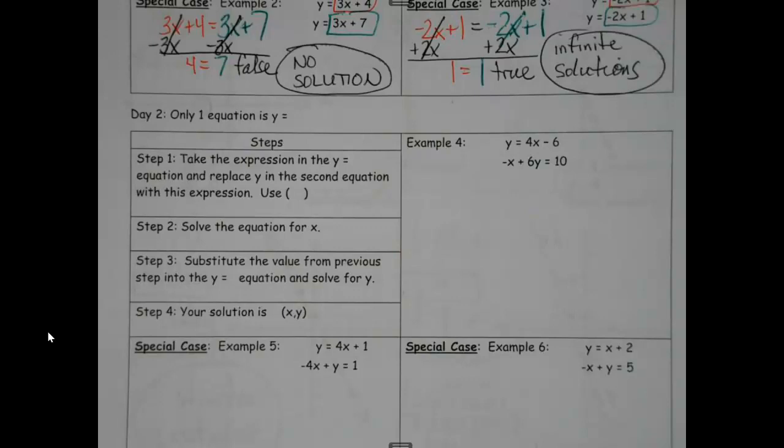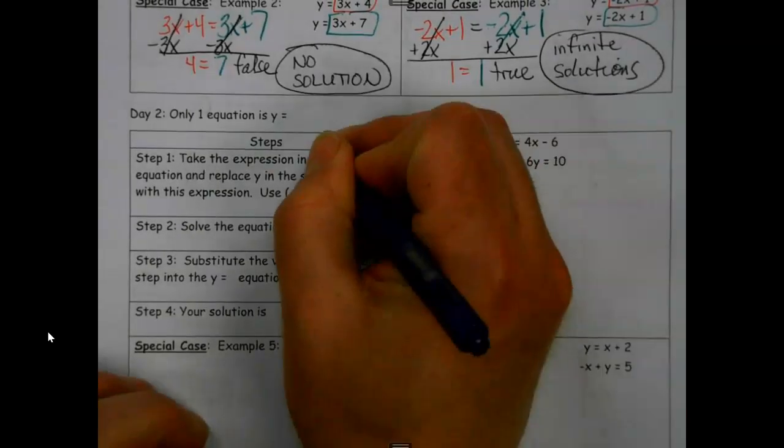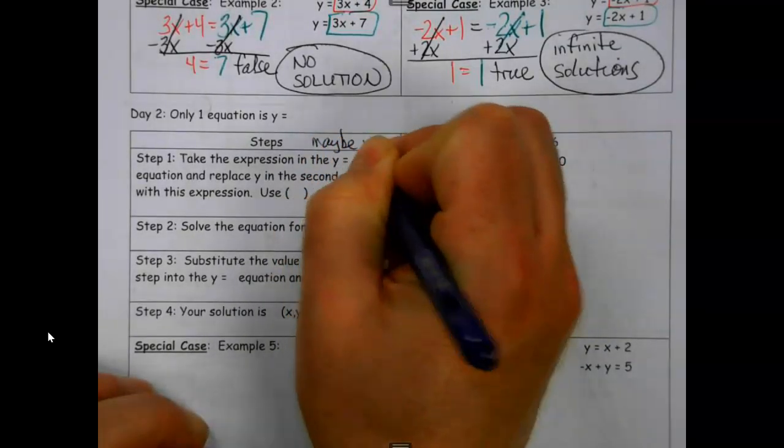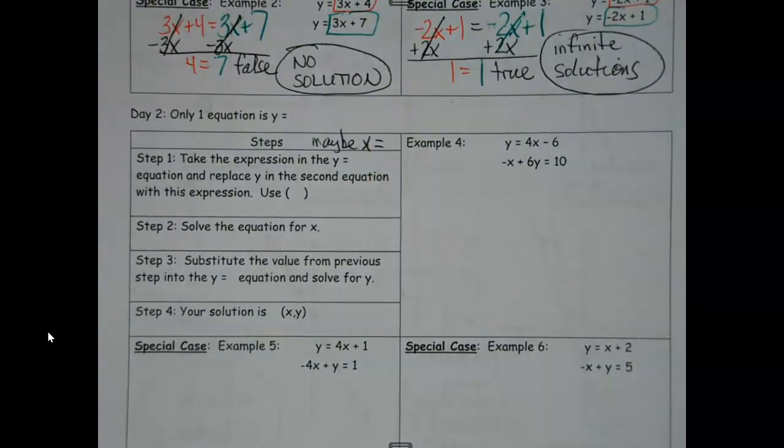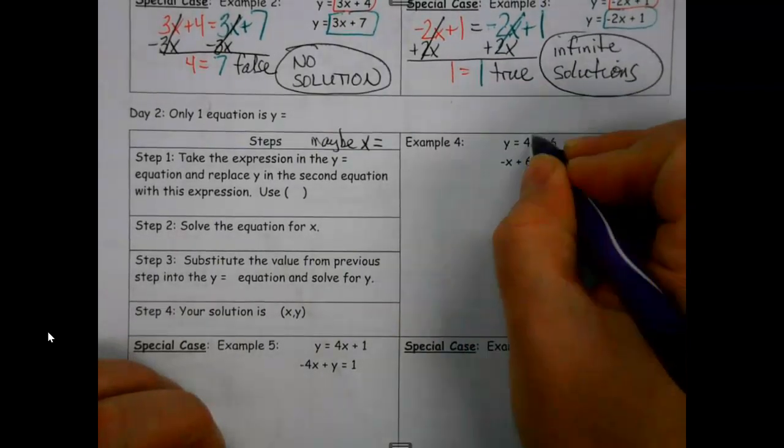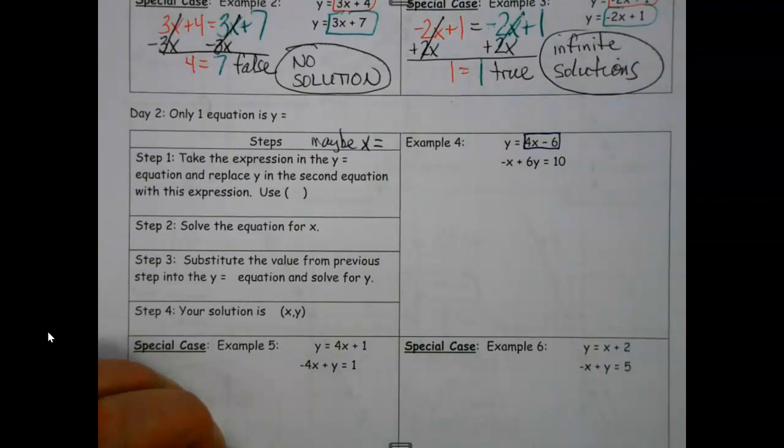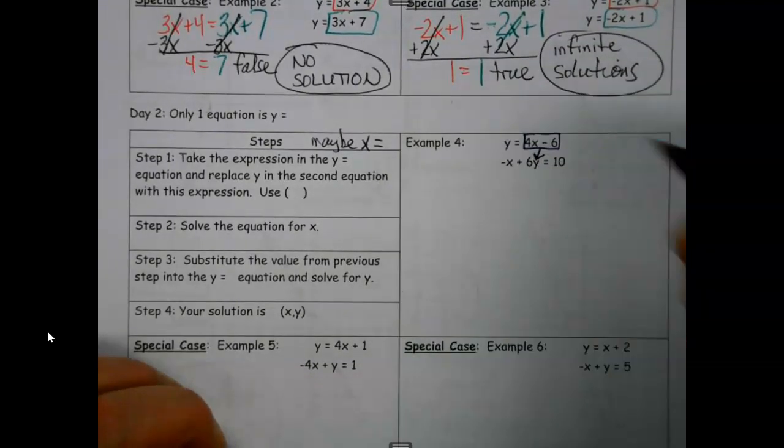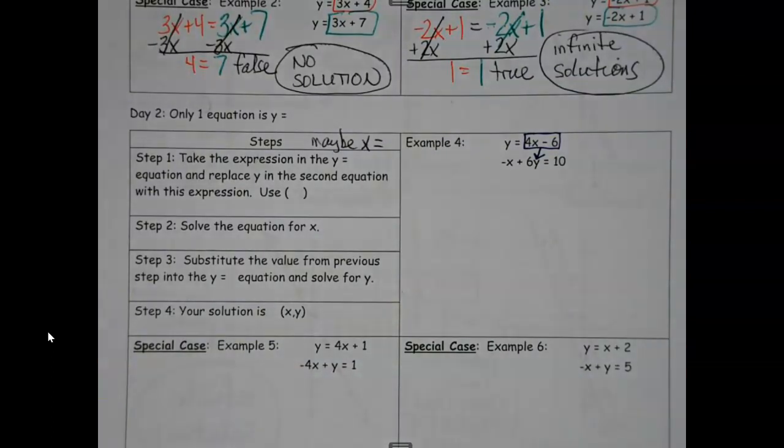What's going to be a little different now is we're not going to set them equal at the start. We're going to take the one that's y equals, or it might be x equals sometimes, and replace that in the second equation. I'm going to take a box and substitute it in where that y is at. So the y is going to get pulled out and this 4x minus 6 is going to get plugged in.